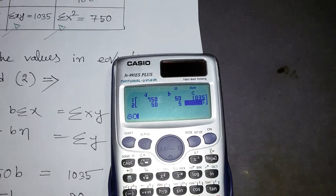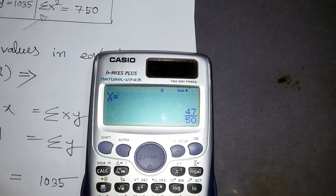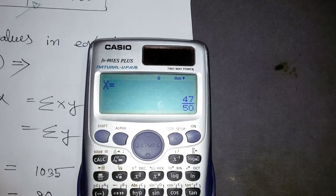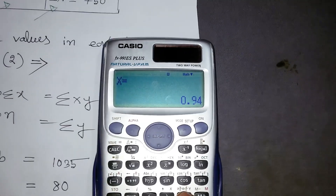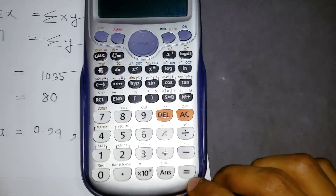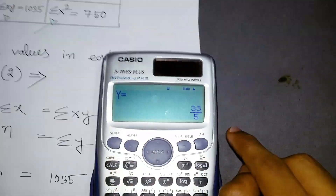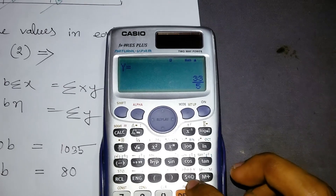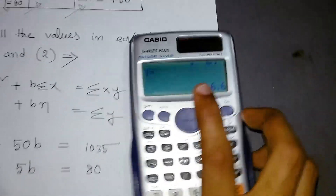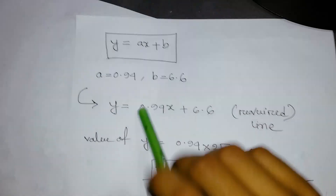After entering all values, press the equals button. The calculator gives x = 47/50, which is 0.94. That is the value of a. Press equals again and you get y = 33/5; pressing S→D gives 6.6, which is the value of b.